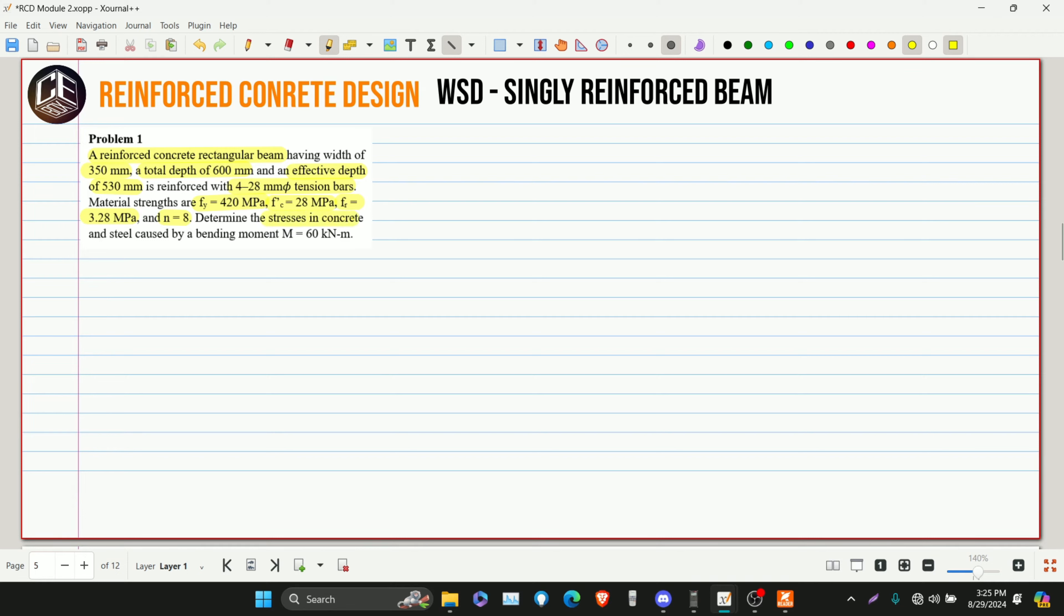Now, determine the stresses in concrete, FC, and stresses on steel, FS, caused by bending moment M, which is equivalent to 60kNm. We're not sure if it will crack or not, so we need to solve for FCT and compare it to FR. Once we compare them, we'll know if the beam will crack or not.